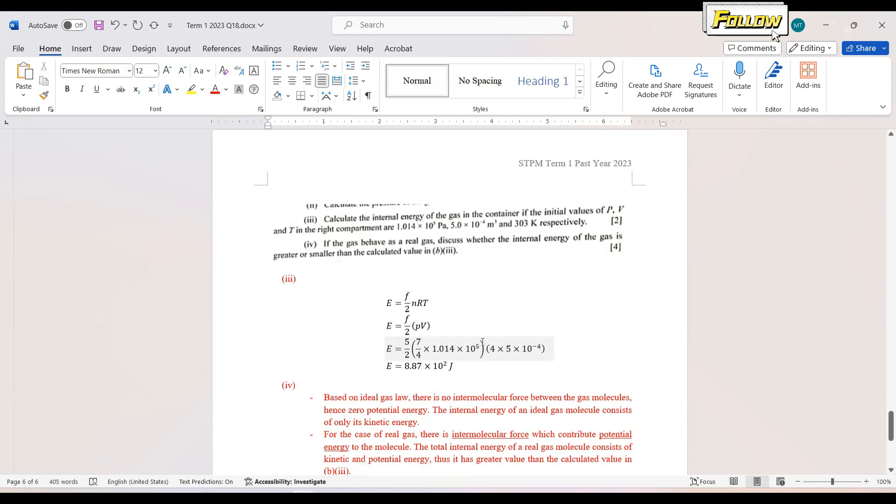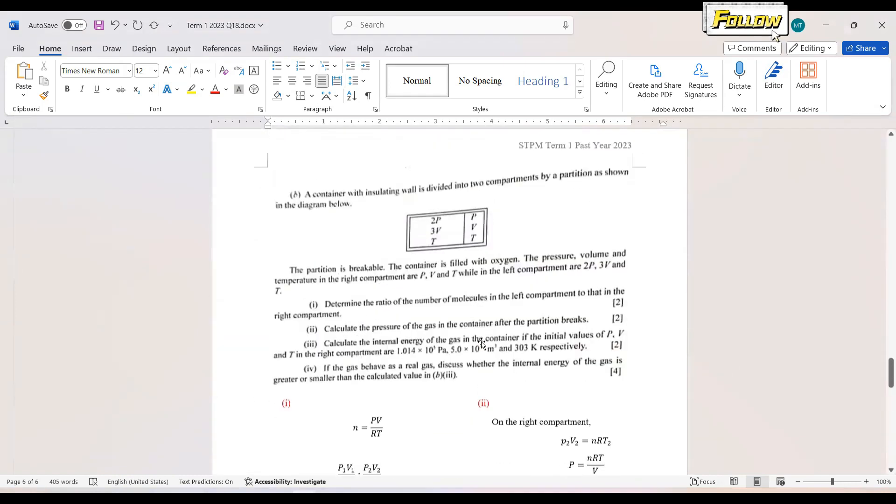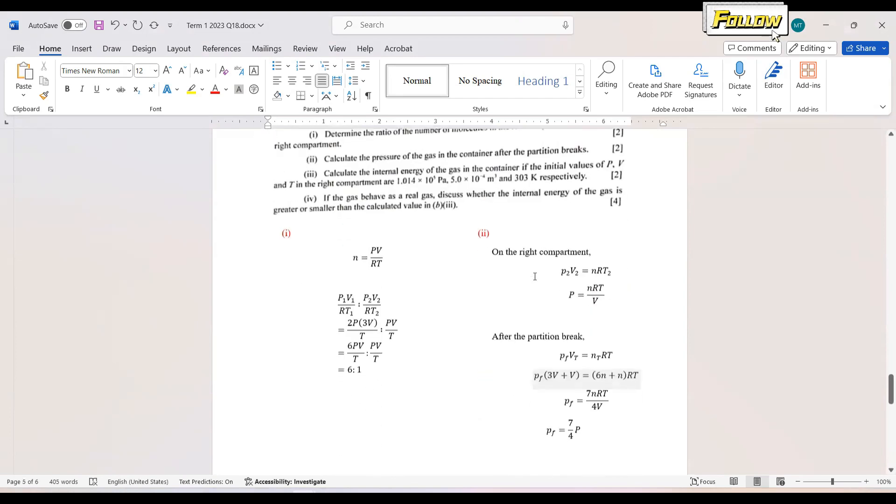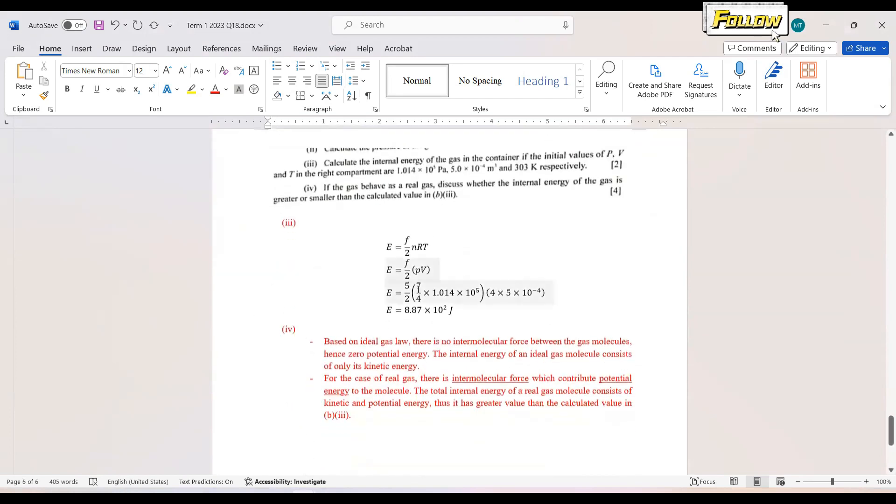As for the degree of freedom, the question mentioned that the container is filled with oxygen gas which is a diatomic molecule, so the degree of freedom equals 5. Put in all those values and you should get the answer as 8.87 times 10 to the power of 2 joules.